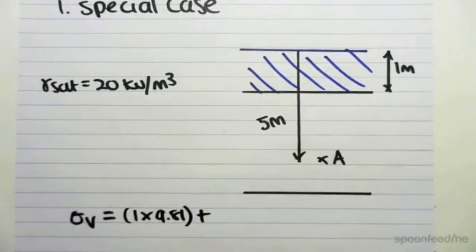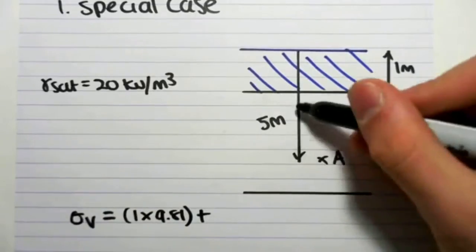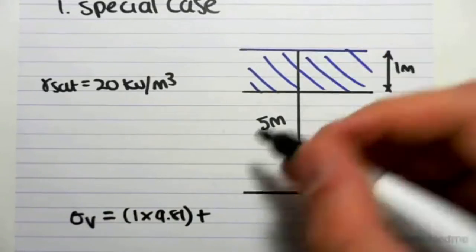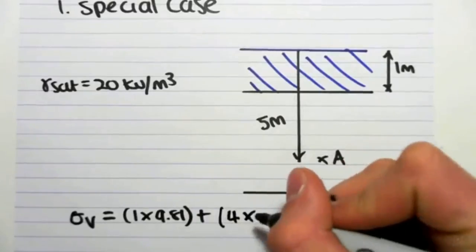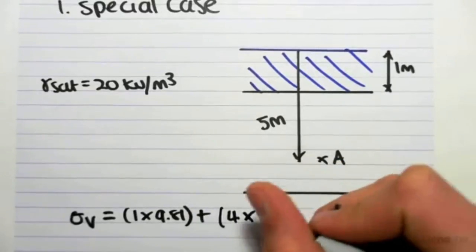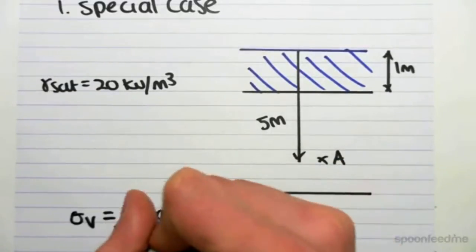plus 4 meters, because it's 5 minus 1, plus 4 meters of gamma sat, which is 20 kilonewtons per meter cubed.